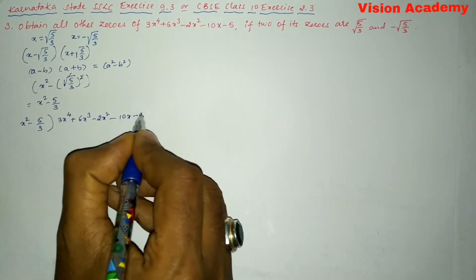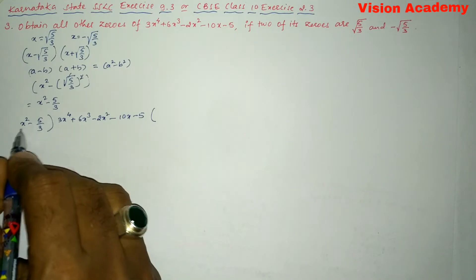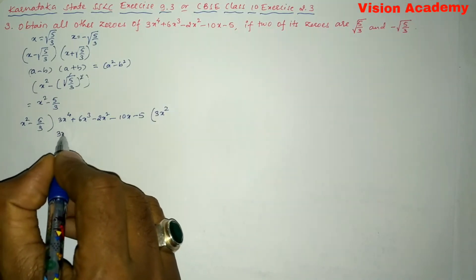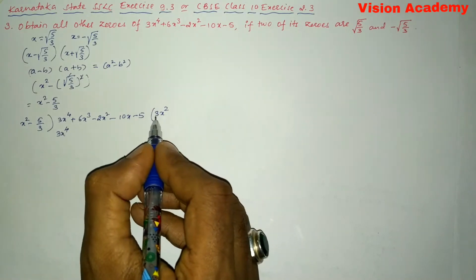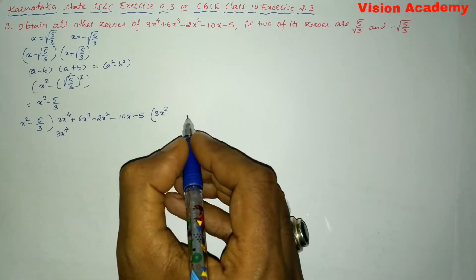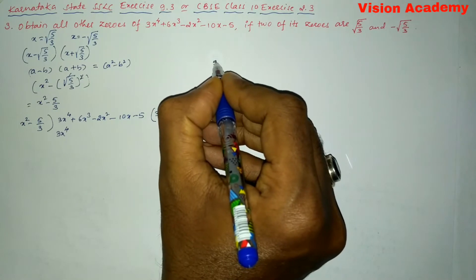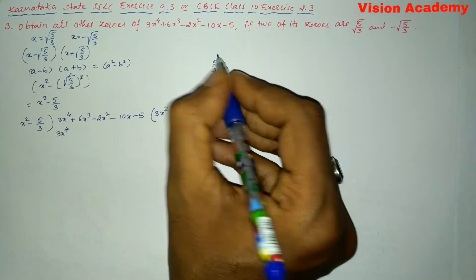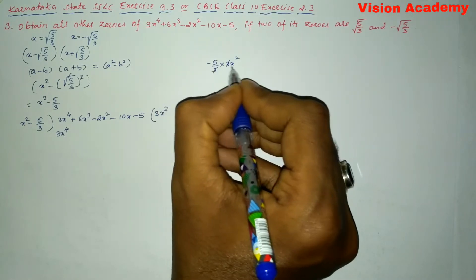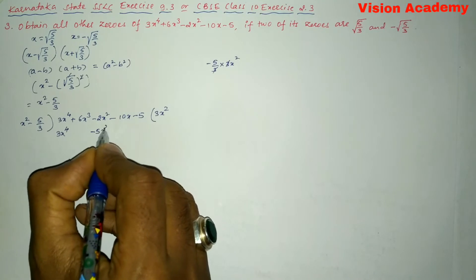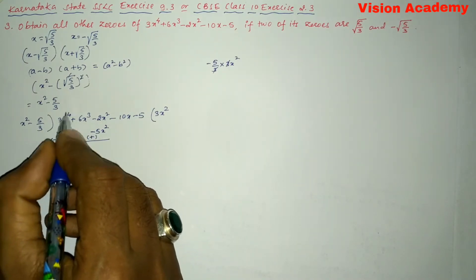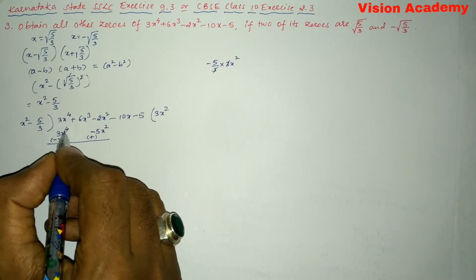What do we multiply by x² to get 3x⁴? We multiply by 3x². So 3x² × x² = 3x⁴. Then 3x² × (−5/3) = −5x². Now subtracting: change the sign, so the 3x⁴ terms cancel, leaving 6x³, and 5x² − 2x² = +3x², then −10x and −5 carry down.